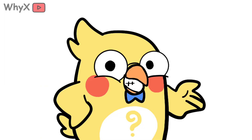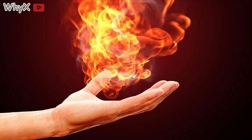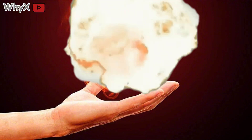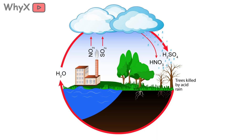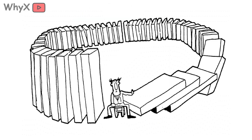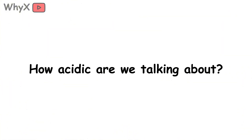The next time it rains, nature becomes a delivery system for those acids, gently showering them down on everything below. Think of it like this: every time we burn coal, oil, or gas, we're lighting little chemical fuses. Those invisible fumes float up into the clouds, and the sky quietly cooks them into acid. Then, when it rains, we get the bill. It's like nature's version of karma, except this one comes in droplets.